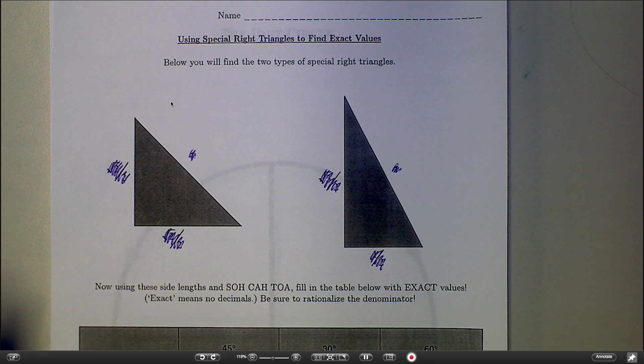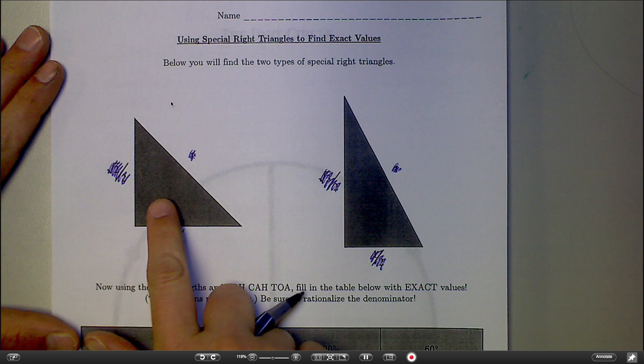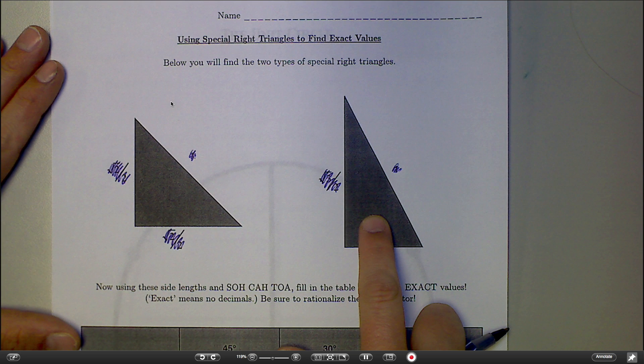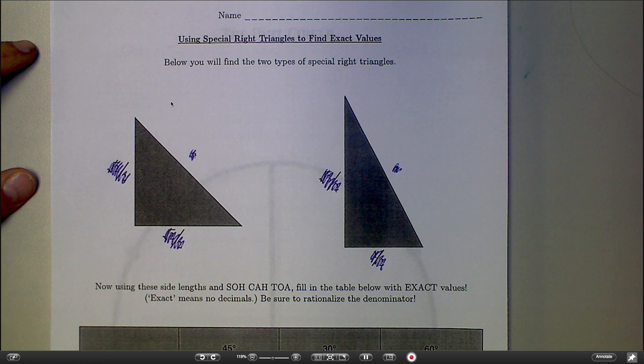What you're looking at here are the special right triangles, and you may even remember those from last year: the 45-45-90 and the 30-60-90. You don't have to know those triangles, but we're going to use them for our activity.